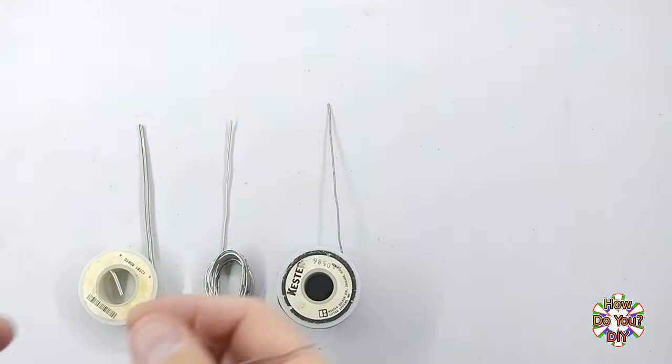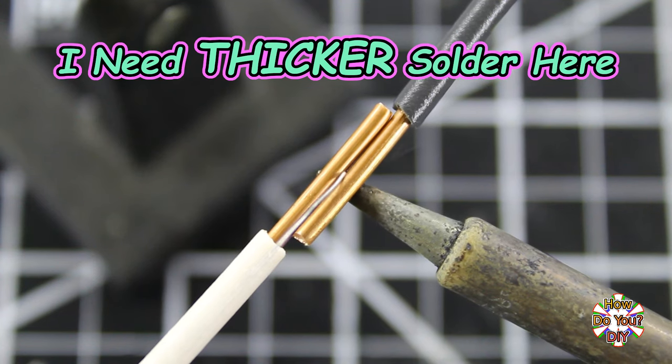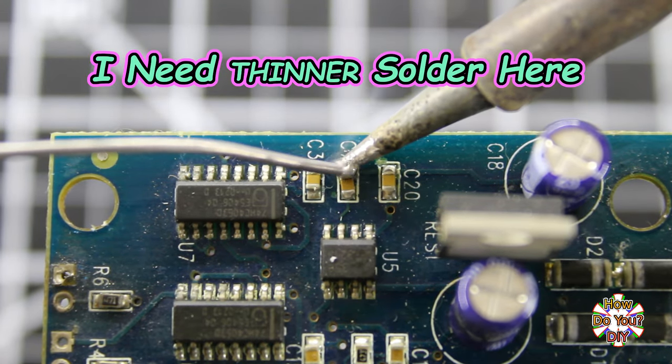And finally, there are different thicknesses of solder. A general rule of thumb is to use thicker solder when soldering bigger wires and parts, then use thinner solder when soldering smaller wires and parts.